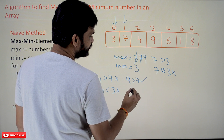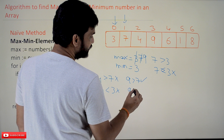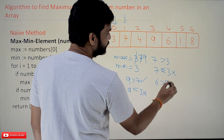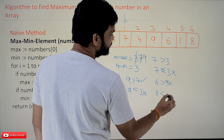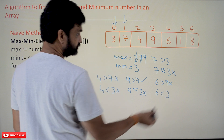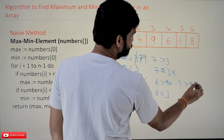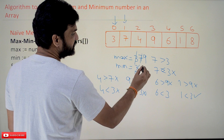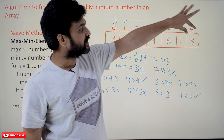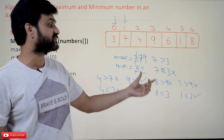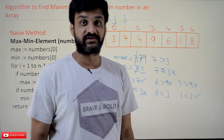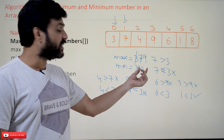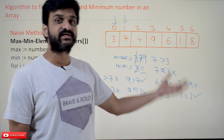Next, is 9 greater than 7? Yes, it is true. So the new maximum element is 9. Then is 9 less than 3? No, it is not true. Next, is 6 greater than 9? No. Is 6 less than 3? Also not true. Then is 1 greater than 9? No, it is not true. Is 1 less than 3? Yes, it is true. So the new minimum element is 1. We also compare 8 with the existing max and min — both cases are false. At the end it returns the max value and the min value.